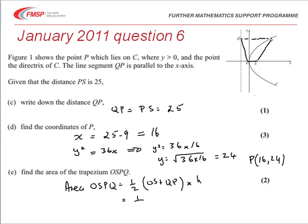Putting that in there then, a half OS, we know is the distance of the focus from the origin, so that's 9. Then QP we've calculated as 25.